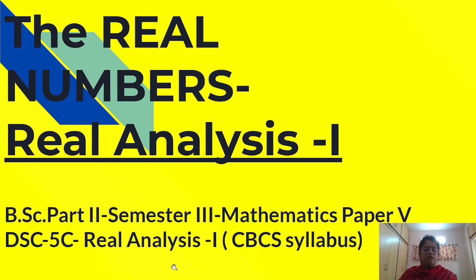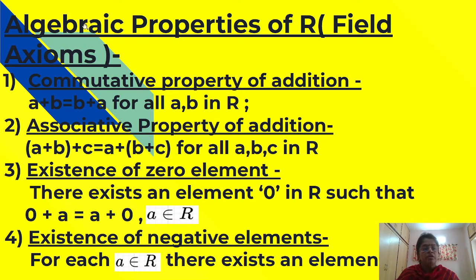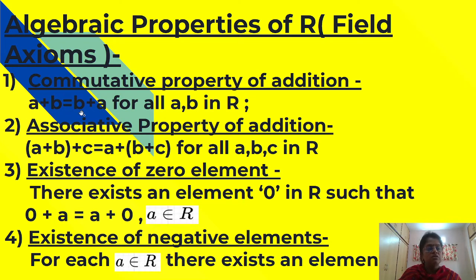Now we will see the real numbers from real analysis. First, let us see what are the algebraic properties of R, which are also called as field axioms. First property: commutative property of addition. It means that a plus b is equal to b plus a for all a, b in R. If a is 2 and b is 3, then 2 plus 3 is equal to 3 plus 2.